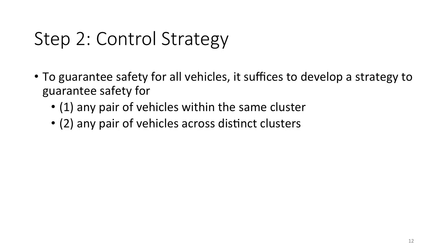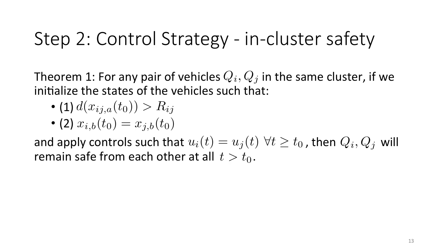Once vehicles are grouped into clusters, we present how to guarantee safety for any pair of vehicles. It suffices to guarantee safety for pairs within the same cluster and pairs across distinct clusters. For any pair of vehicles Q_i and Q_j in the same cluster, if we initialize states such that they are outside of each other's danger zone and their x_iB components are identical, and if we apply the same control for both vehicles, then they will continue to remain safe from each other. This is a direct result of the fact that the dynamics depend only on the x_B component and the input.